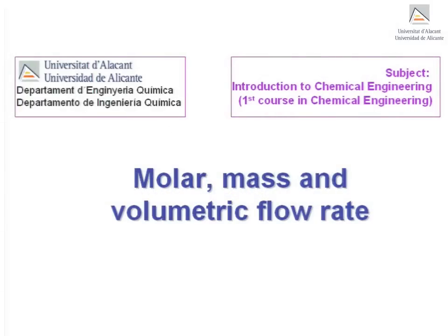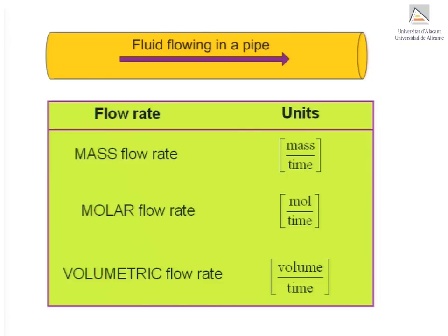Molar, mass and volumetric flow rate. The flow rate of a fluid in a pipe is a process variable that can be specified in mass, molar or volumetric units. That is, in mass per unit time, moles per unit time or volume per unit time.